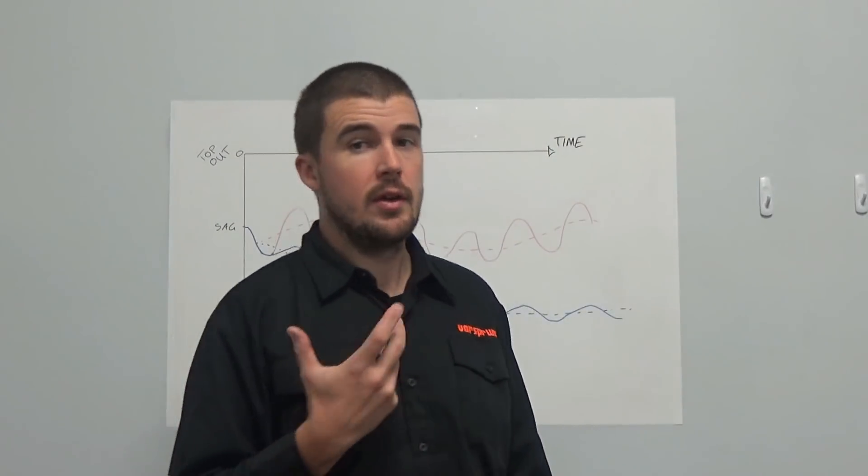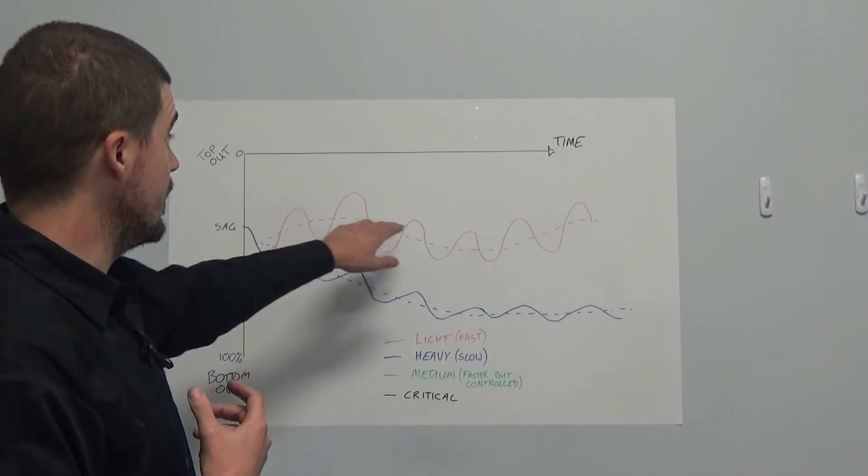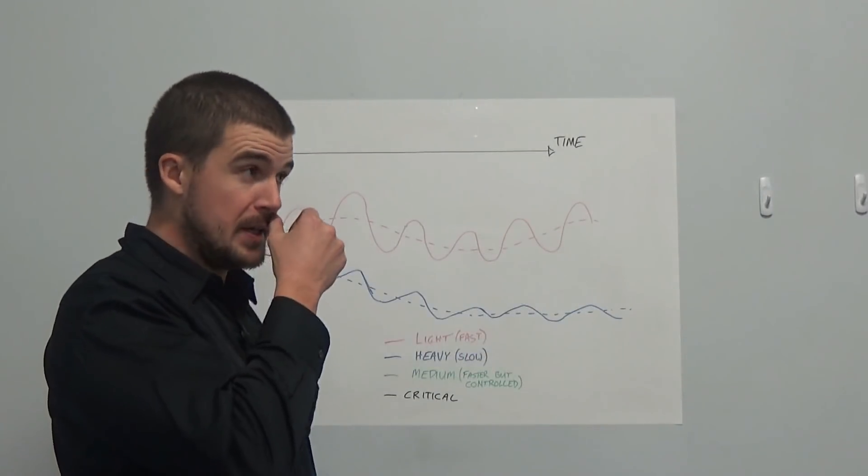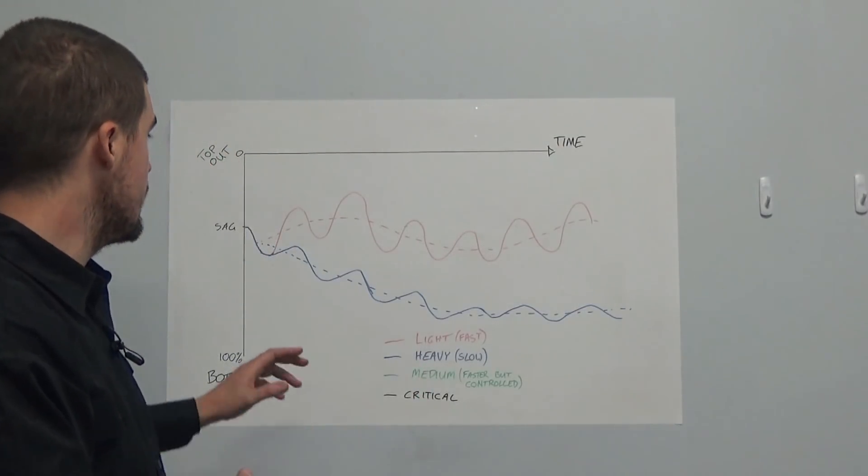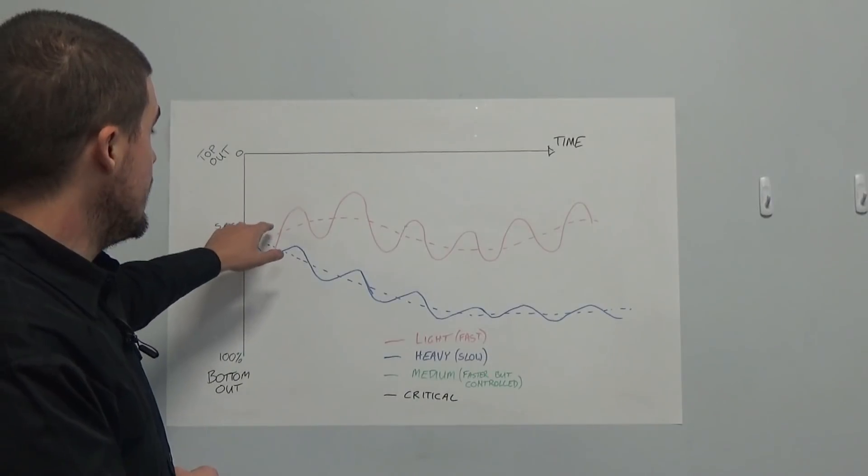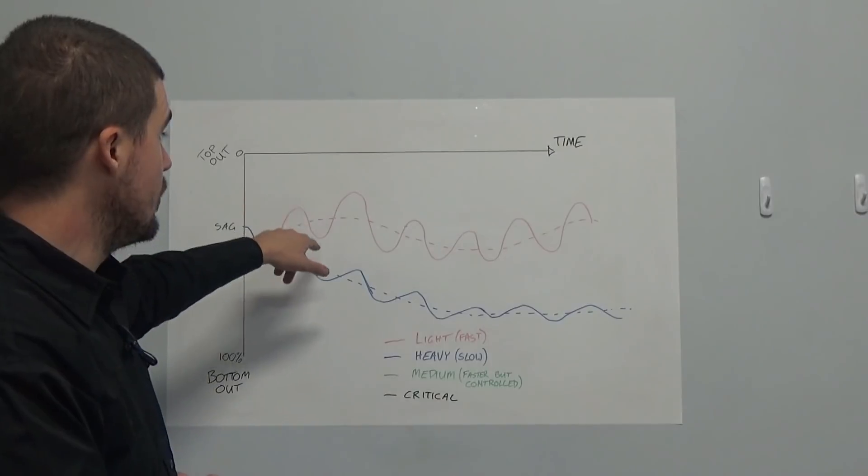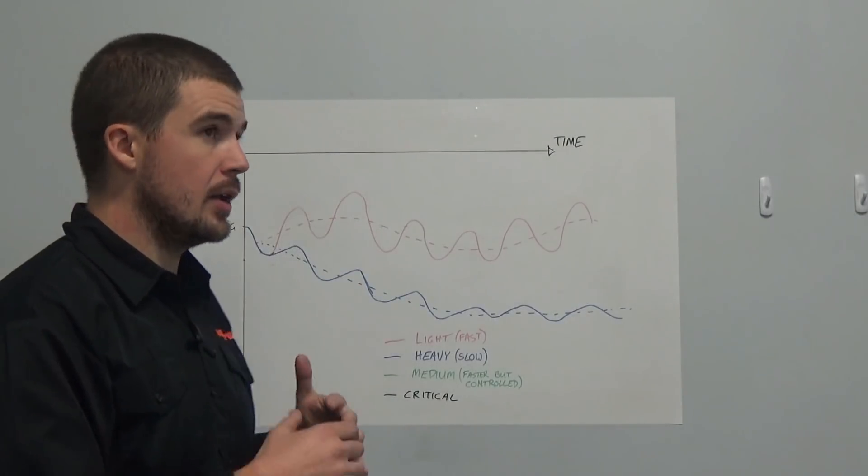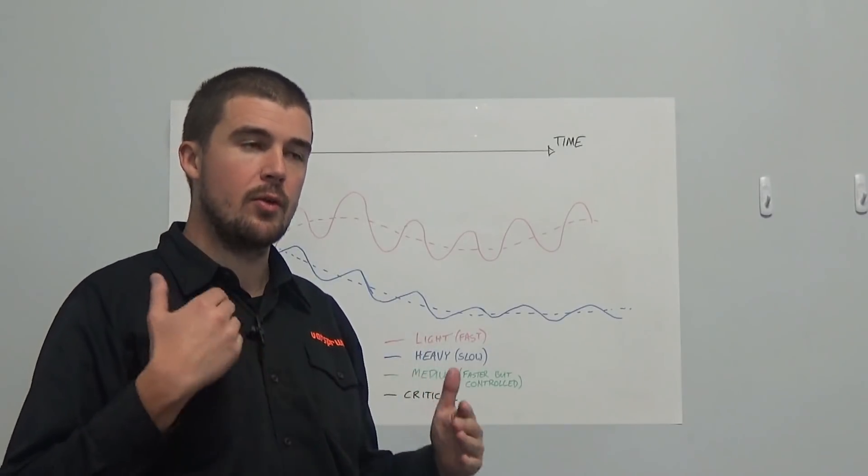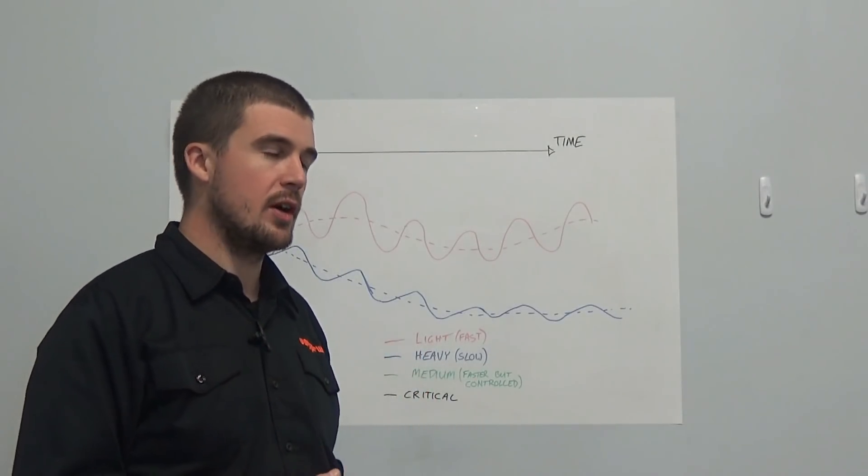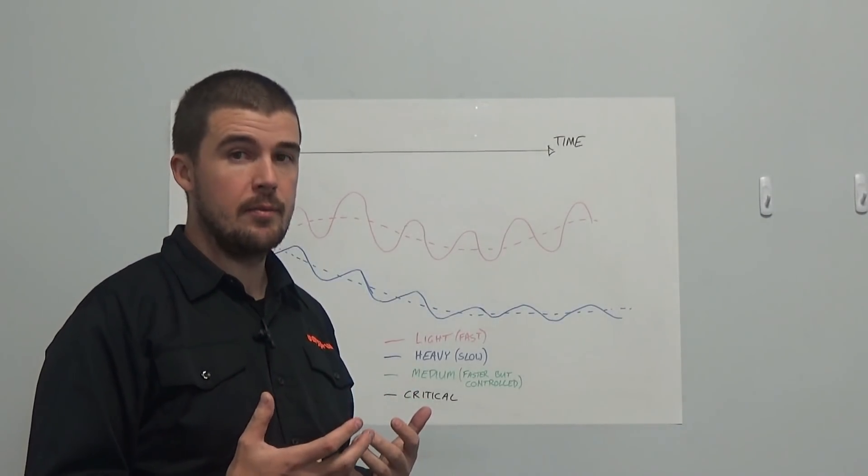Now, if we have a quick look at the very basics of what happens over repeated bumps, if we run a very light damping setting, this is particularly relevant to rebound. Compression does play into it, we're not going to go into that here. What tends to happen if we run the rebound super fast is that over repeated bumps, and particularly because most bumps are not purely sinusoidal. We're not just hitting braking bumps that are always the same distance apart, always the same size, and so forth. In reality, the bumps are a bit more random than that, typically.